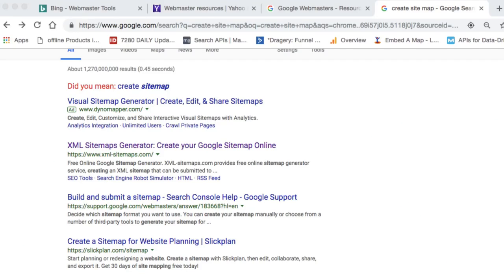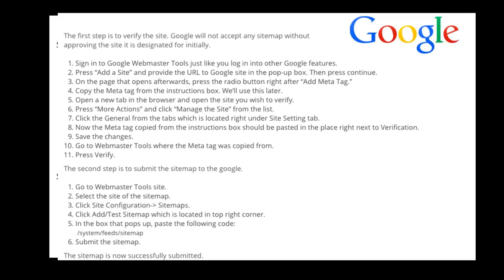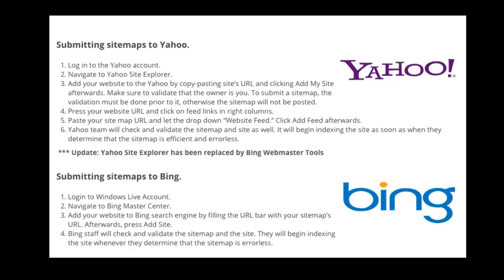I'm going to share my screen with you and show you two screenshots. You can pause this video at any time — these are just the instructions on how to set up your webmaster tools for Google. If you don't know how to do that, just go to Google and type in 'webmaster tools.' It's the same exact thing for Yahoo and Bing — no different. They all have their own unique webmaster tools for a reason.